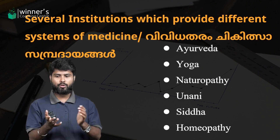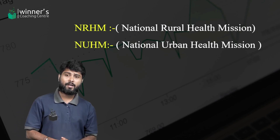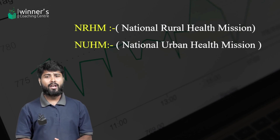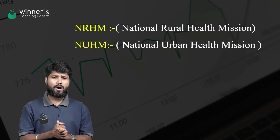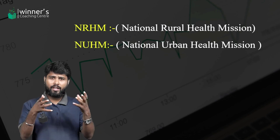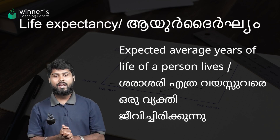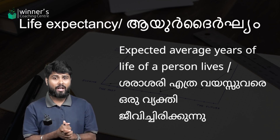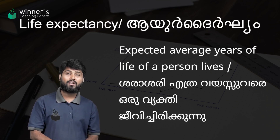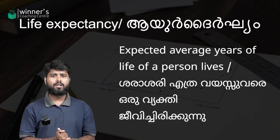There are important health missions: N.R.H.M. — the National Rural Health Mission — and N.U.H.M. — the National Urban Health Mission. Life expectancy is the expected average number of years of life of a person. In India, the life expectancy is 70 years.